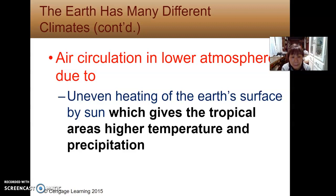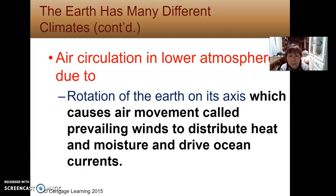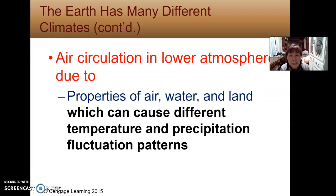The uneven heating of the Earth's surface by the Sun gives the tropical area higher temperature and precipitation. The rotation of the Earth on its axis causes air movement called prevailing winds, which distribute heat and moisture and drive ocean currents. The properties of air, water, and land cause different temperature and precipitation fluctuation patterns depending on whether you have a mountain or how much greenhouse gases are in the atmosphere.